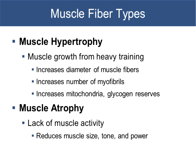Muscle hypertrophy — growth from heavy training — increases the diameter of muscle fibers, the number of myofibrils (actin and myosin filaments making up the sarcomere), the number of mitochondria, and glycogen reserves. When you start a workout regimen, at first you feel exhausted, but as you become more consistent and build more muscle, you have more energy because you have more mitochondria, more glycogen reserves, and more contractile units. The size of the muscle fiber increases overall.